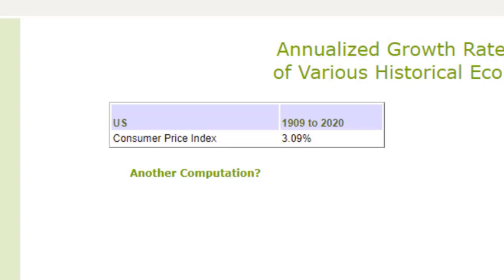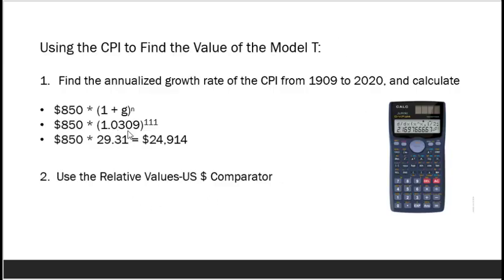Now let's put that information back into our slides. We got a growth rate of 3.09%, so I'm going to plug that in for G — in decimal form, that would be 0.0309. I'm also plugging in for N the number of years between 1909 and 2020, which is 111 years. So I'm going to compound 3.09% over 111 years. When you plug that into your calculator, prices have increased by a factor of 29.31. Multiply that by $850, and we would say that the value of the Model T when we inflate by the CPI is about $24,914 — roughly similar to what we might think of as the price of a basic small car today.